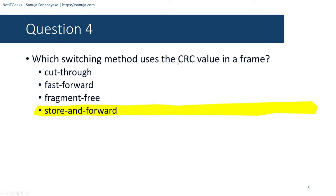Question number forty-four: What action will occur if a switch receives a frame with a specific destination MAC address? You need to understand how MAC addresses work. The answer is the switch forwards it out all ports except the ingress port — the incoming port — when the destination MAC address is a broadcast address.